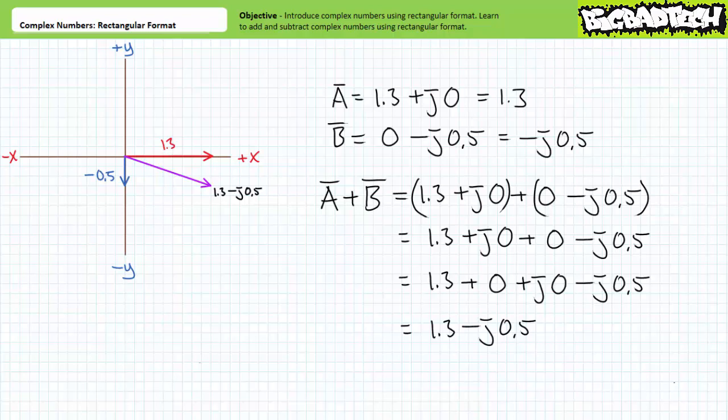Because complex numbers are a little different than normal numerical quantities, they're often written differently. Often textbooks write vectors using script or bold notation, but I find an easier way to annotate a complex number, vector, or phasor is to simply use an overbar. For example, the canoe's complex number in rectangular format could be represented as ā = 1.3 + j×0, or just 1.3. The river's complex number could be represented as b̄ = 0 − j0.5, or just −j0.5. And finally, the resultant travel vector a + b could be represented as c̄ = 1.3 − j×0.5 using rectangular format.